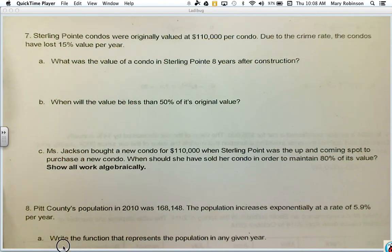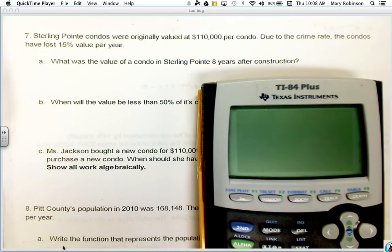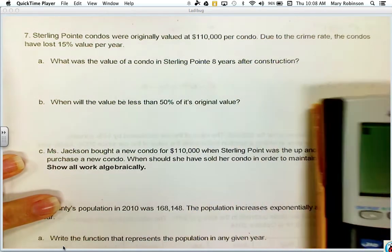In this video, I'll be covering problems 7 and 8 on Test 6 Review for Honors. Number 7 says that Sterling Point condos were originally valued at $110,000 per condo, and due to the crime rate, the condos have lost 16% value each year.